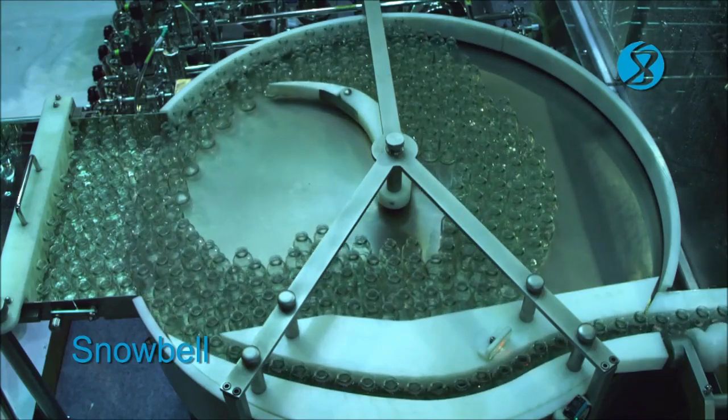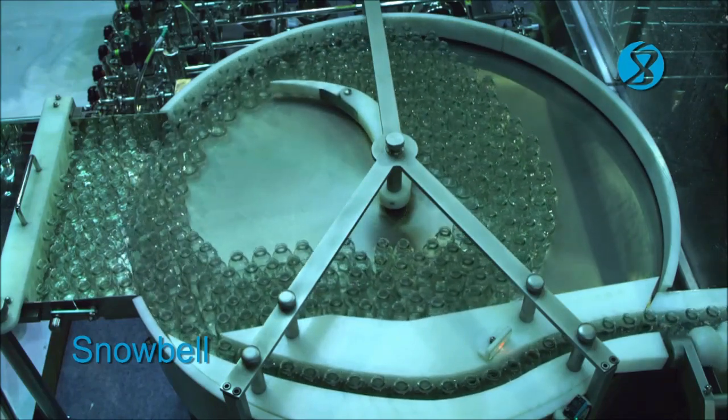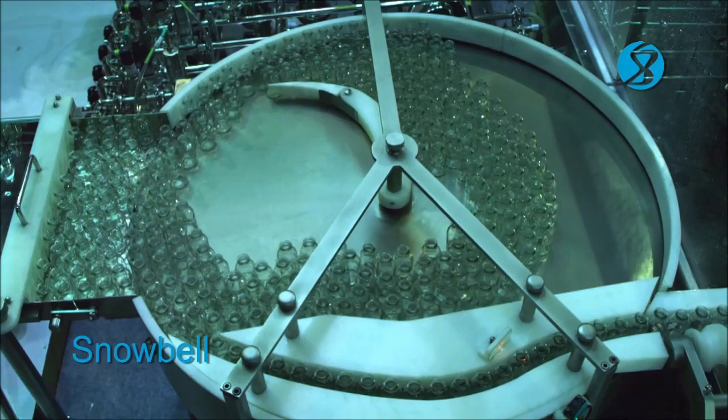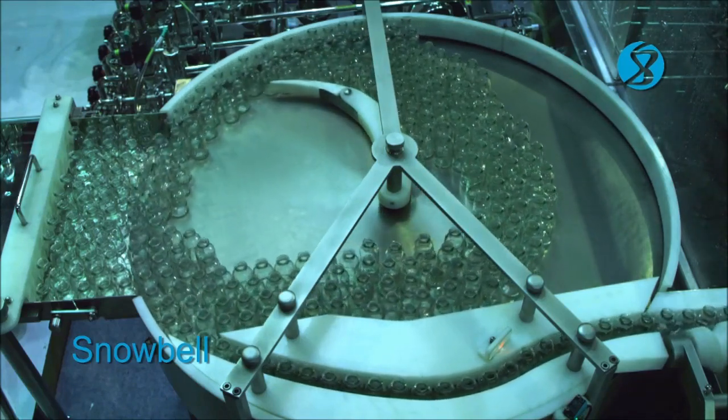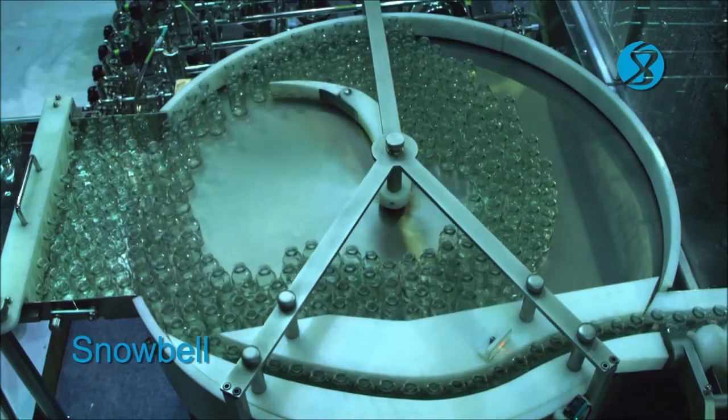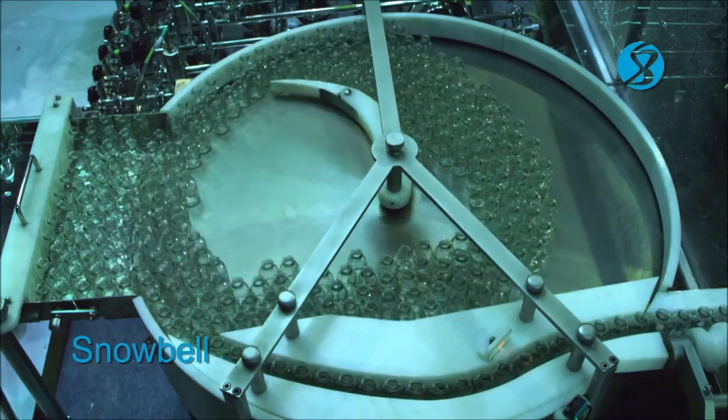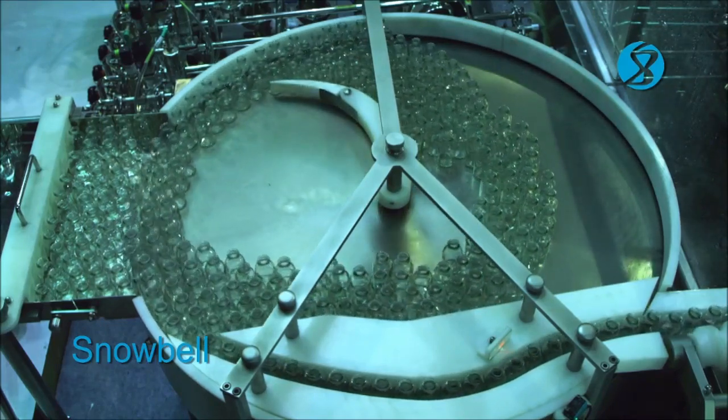Vials are fed to an in-feed conveyor from the decartening room through a vial transfer system. The in-feed conveyor transfers the vials to a turntable. The in-feed turntable unscrambles the vials.